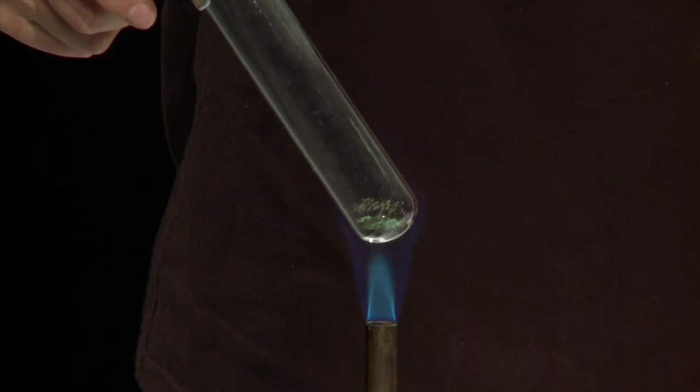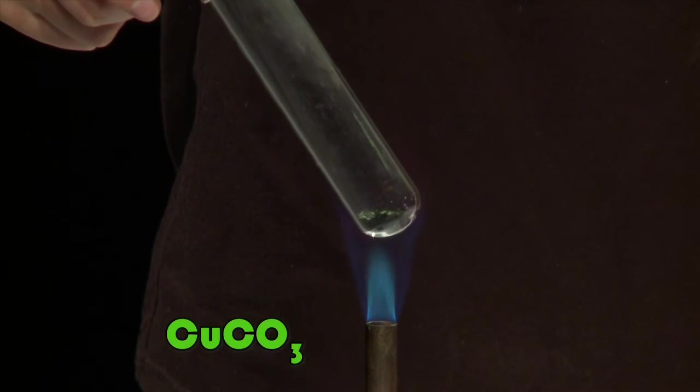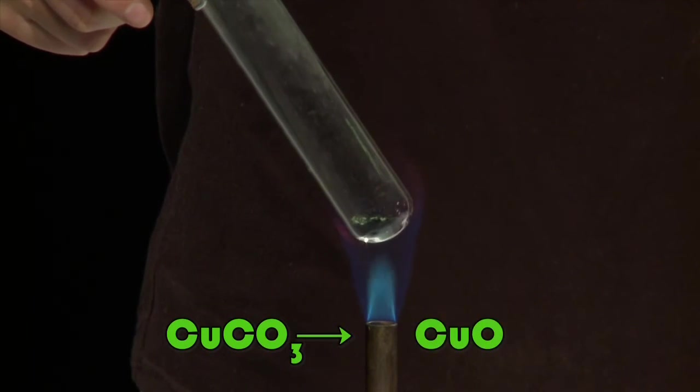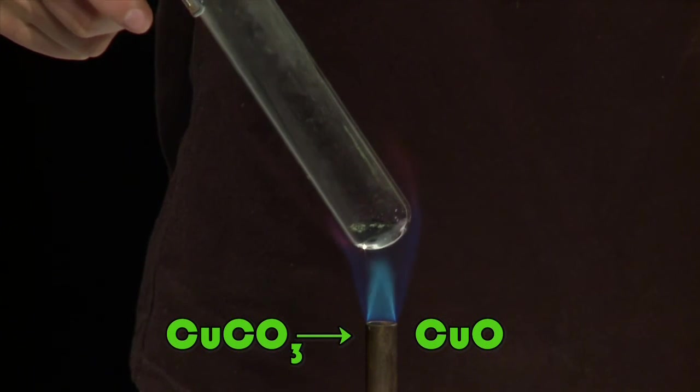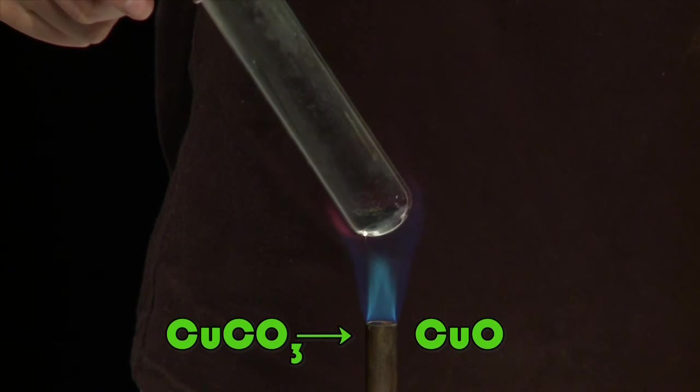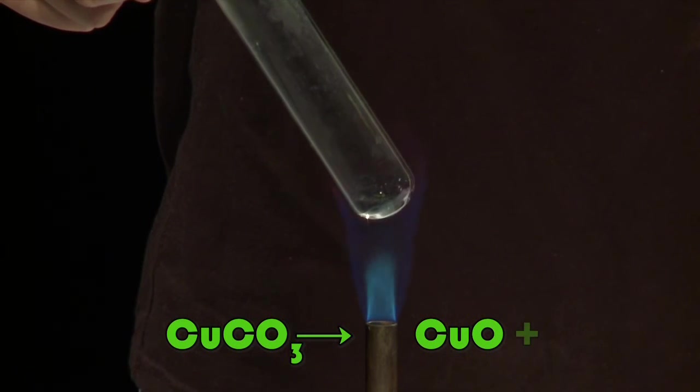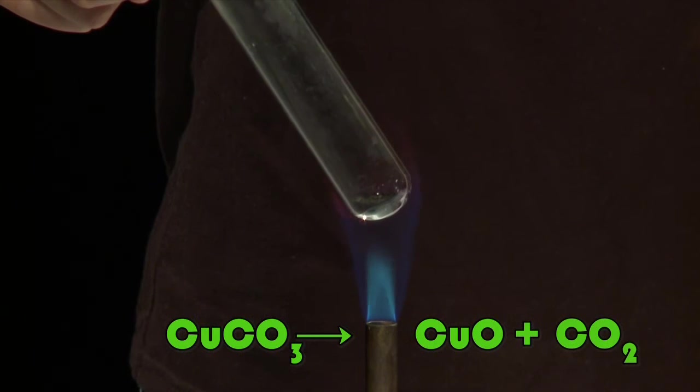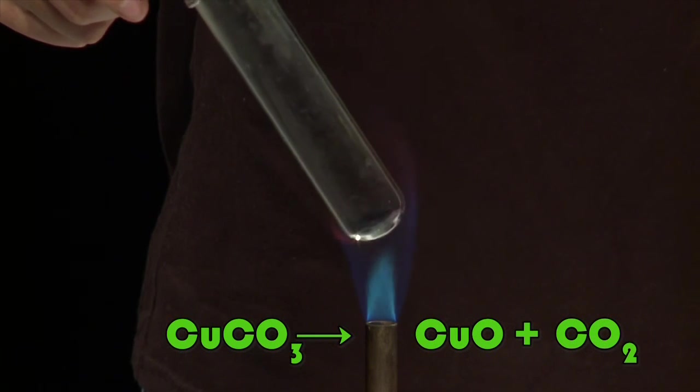A black solid is appearing inside the tube. This solid is copper oxide, a brand new chemical being formed by the reaction. Notice how the black solid seems to float inside the tube. This is because carbon dioxide has also been given off from this reaction.